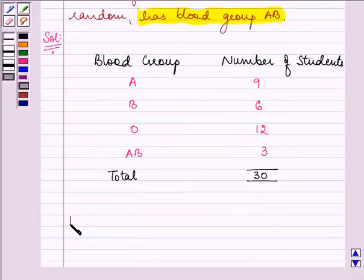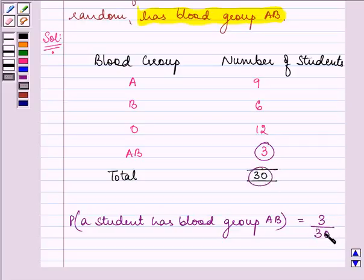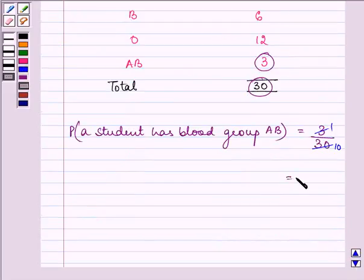Now we need to find out the probability that a student has blood group AB. So 3 students out of 30 students were having blood group as AB. On simplifying we get 1 by 10 and that is our required probability.